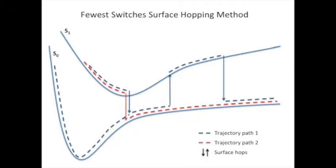In Tully's fewest switches surface hopping method, the nuclei are treated classically, and a hop can occur between potential energy surfaces as illustrated here.